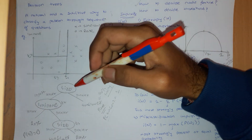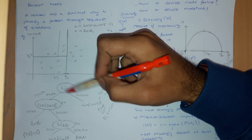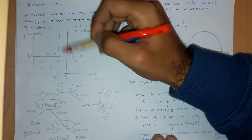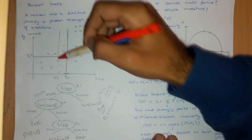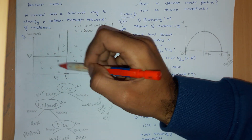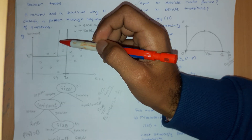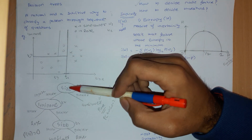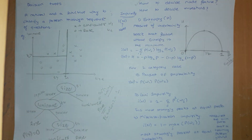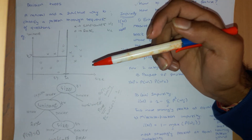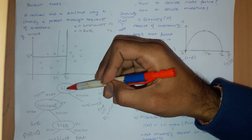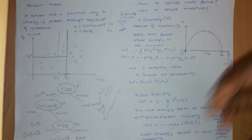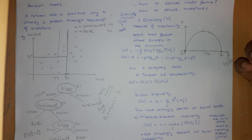By entropy: if I take size as the first feature, entropy on the sunflower-only side is zero, and on the other side I get some value that can be further minimized. Then when I take luminance for the second split, one side becomes zero and the other still has some value. So entropy is the measure by which you can select features — choose the feature giving minimum entropy. This is an exhaustive search: first choose size and check entropy, then choose luminance and check entropy, then pick whichever is minimum.